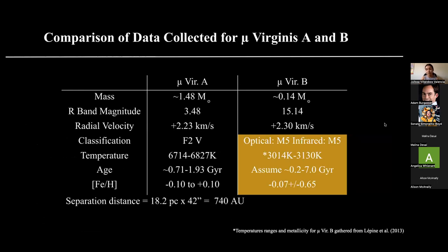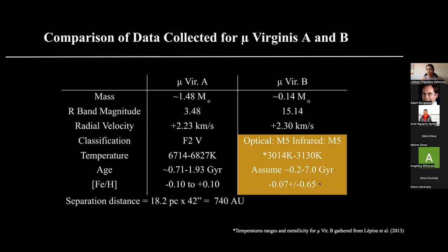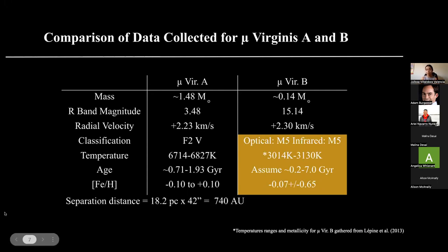Next, we have a table of the results and comparison of data collected for both Mu Virginis A and B. The optical spectrum gave a classification of M5, and infrared also gives M5. Something very important is that the age of Mu Virginis A and the age of Mu Virginis B overlap — they are very similar ranges. The metallicities of both objects are also very similar — Mu Virginis B is about eight-tenths as abundant as the Sun, and Mu Virginis A is about eight-tenths as abundant as the Sun. This is very important because it confirms that we can apply measurements from Mu Virginis A to Mu Virginis B.